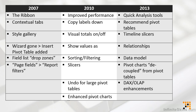After the shock of 2007 and the ribbon and that whole interface came and went, we were introduced to 2010, where some of the refinements were a little bit more refined. We got some improved performance — this had to do with multi-threading and some things that just make pivot tables work faster, and the results be a little bit more effective. In 2010, we introduced a wonderful feature called copy labels down, which allows us to actually copy labels down a pivot table so that we can more easily use the pivot table itself.